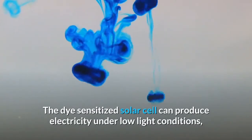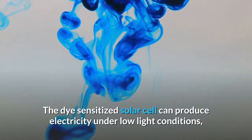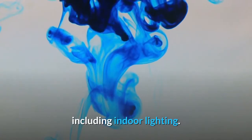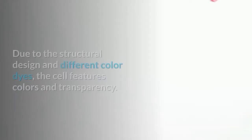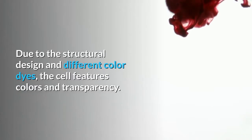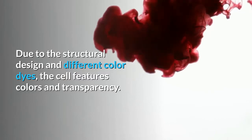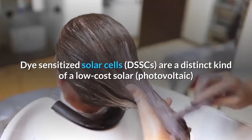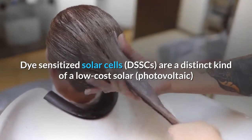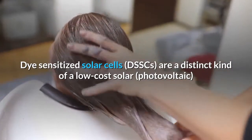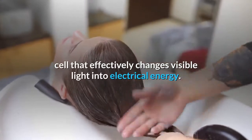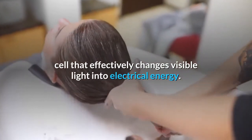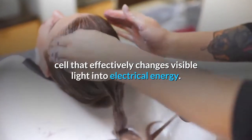The dye sensitized solar cell can produce electricity under low light conditions including indoor lighting due to the structural design and different color dyes. The cell features colors and transparency. Dye sensitized solar cells (DSSCs) are a distinct kind of low-cost solar photovoltaic cell that effectively changes visible light into electrical energy.